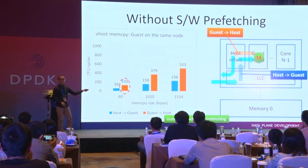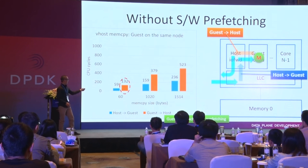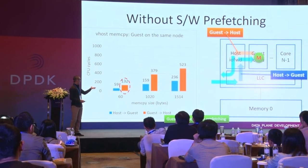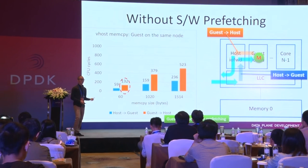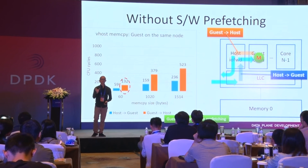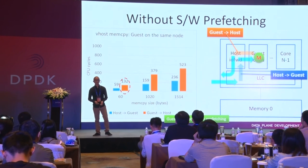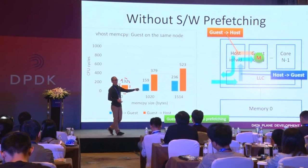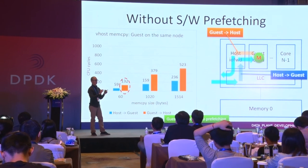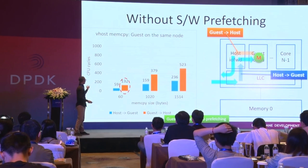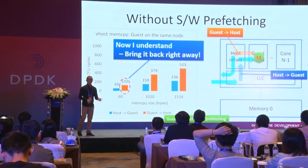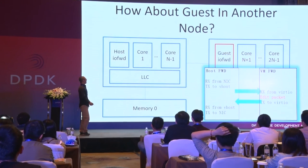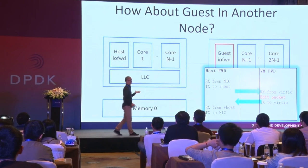After we remove that prefetch, here's the 64-byte memory copy. The CPU cycle is still very high. How come it's ineffective on the memory copies? Because it's only once — it's 64 bytes. So after removing prefetch, it may trigger more hardware behaviors. However, it doesn't work. That is to say, we will just need to put that prefetch sentence back. Otherwise, the performance will be compromised, especially for small packets.